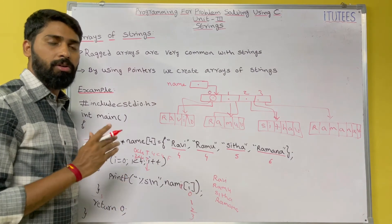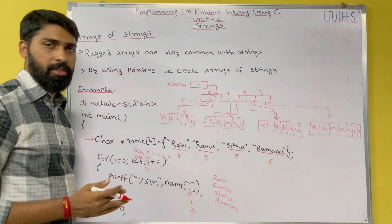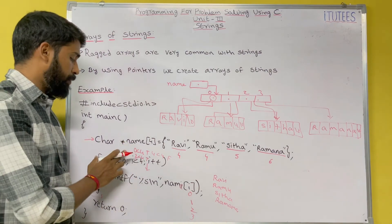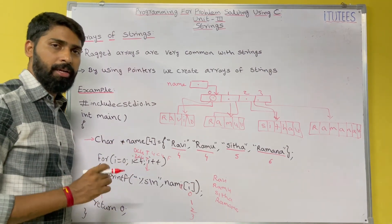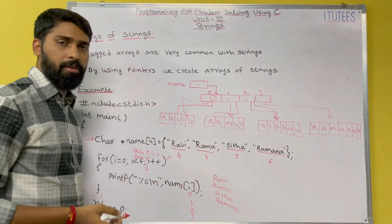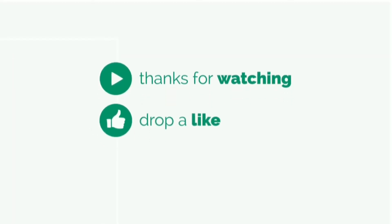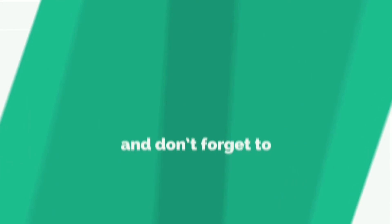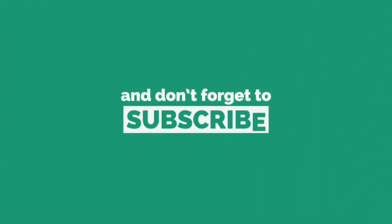In this way, you are going to create array of strings. How we create array of strings? By using this pointer, you are going to create array of strings. This is the graphical representation of array of strings. Okay, thank you.